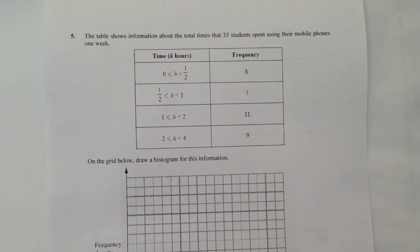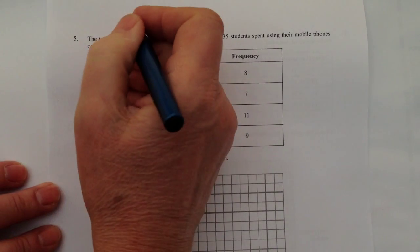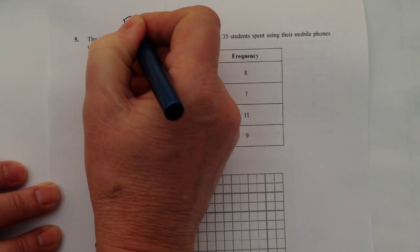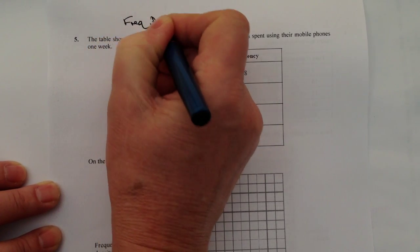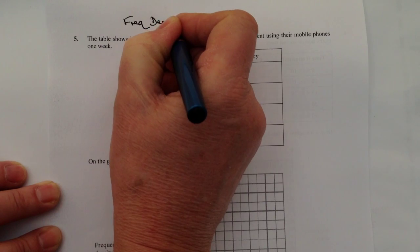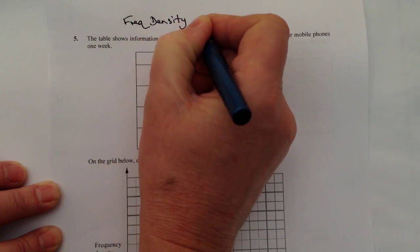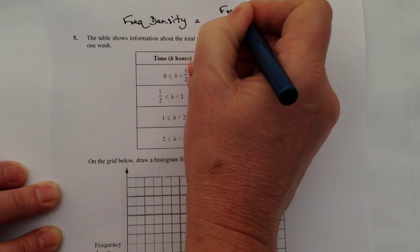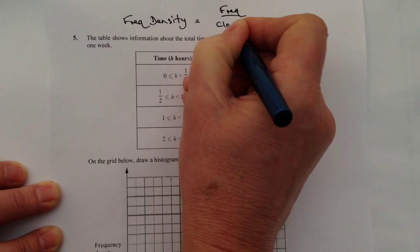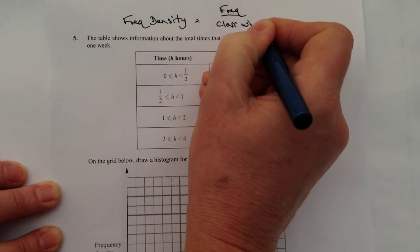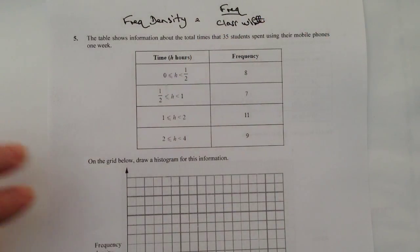So when you're dealing with histograms, the main thing you need to remember is to always write down the formula that you need to be aware of, which is frequency density equals frequency divided by class width. And that will help you to answer most of the questions that you're going to get on histograms.